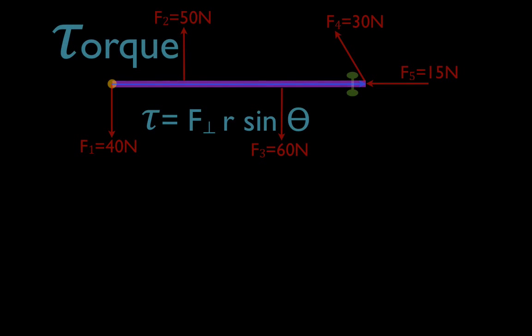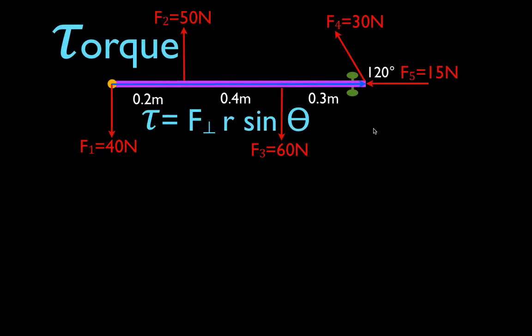In today's video, we're going to go over a problem involving torque. We have five forces — one, two, three, four, five — all acting on this pink object, which is a door. You're looking at the door from the top. These are the handles of the door, and this is the hinge, the axis of rotation. This blue arrow represents the radial vector, and the distance along the radial vector is what we call the lever arm. We're going to calculate the individual torques from each of these five forces, sum them up, and get the net total torque resulting from those five forces.